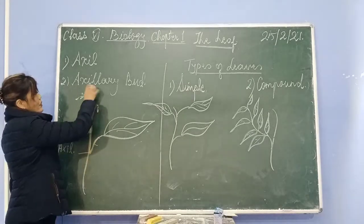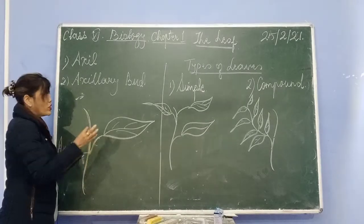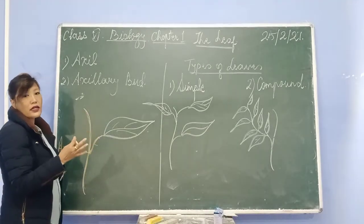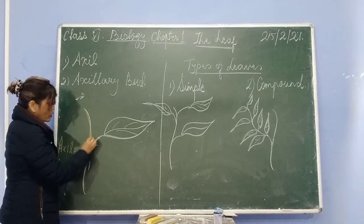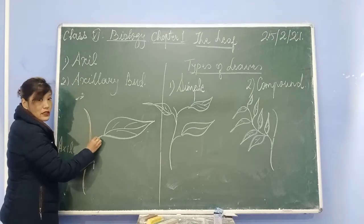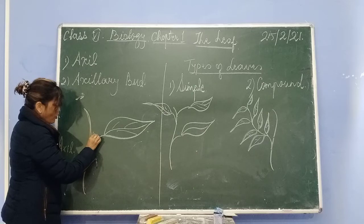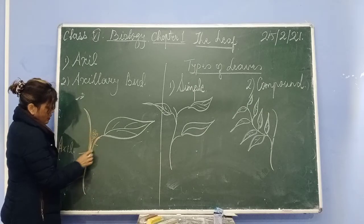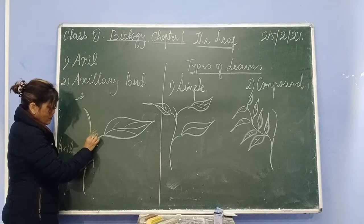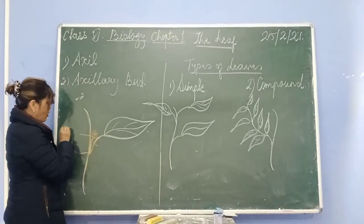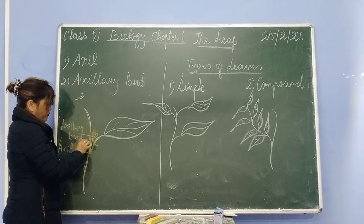The other term is axillary bud. You know what a bud is — a part of a plant. The small bud which forms at the junction between the stem and the petiole: if there is a small bud formed at the junction between the stem and the leaf stalk, then this bud is called the axillary bud.